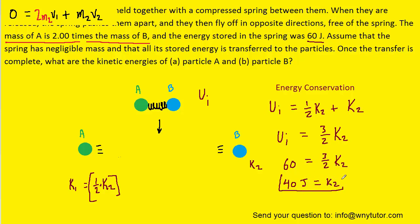So that's going to be the kinetic energy of what we labeled as particle B in the original picture. Since k2 is 40 joules and we know that k1 is just half of k2, it should be relatively straightforward to see that k1 turns out to be 20 joules, and that's the kinetic energy of particle A.